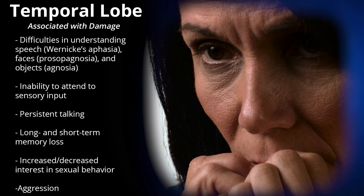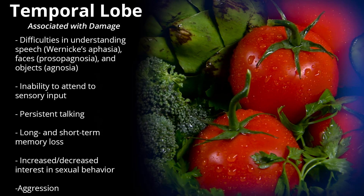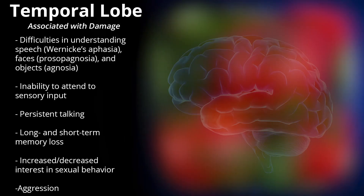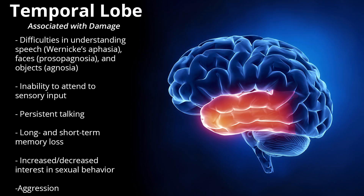Additional conditions associated with temporal lobe damage include prosopagnosia — difficulty recognizing faces — and object agnosia, inability to attend to sensory input, persistent talking, long and short-term memory loss, and increased or decreased interest in sexual behavior and aggression.